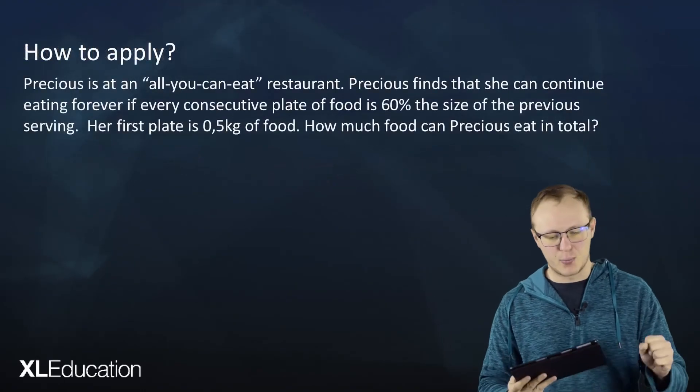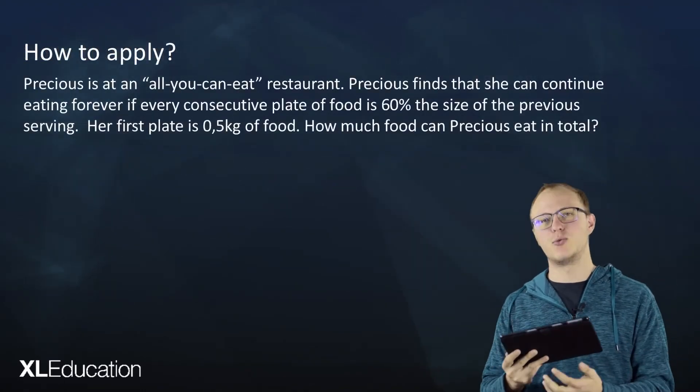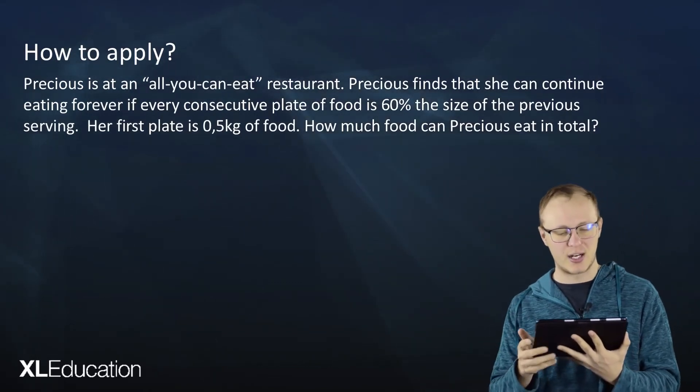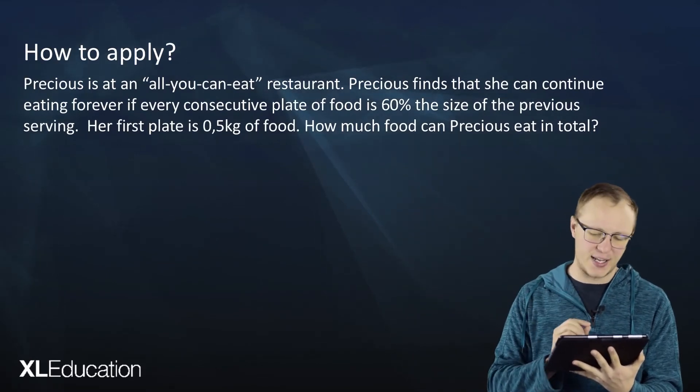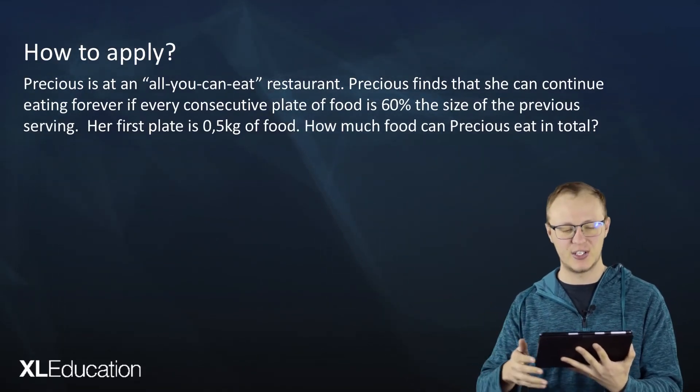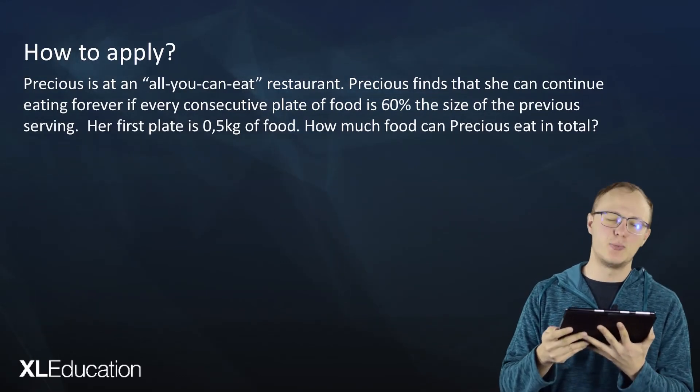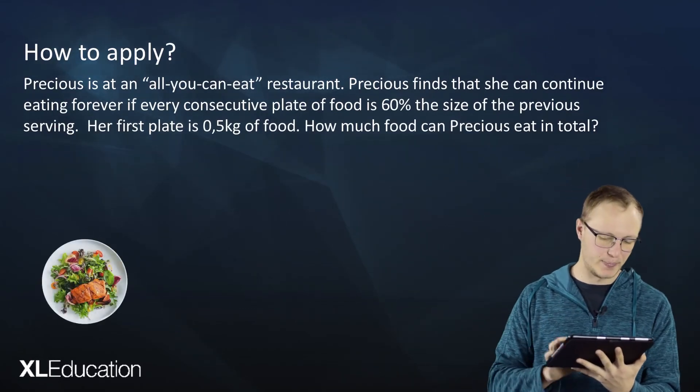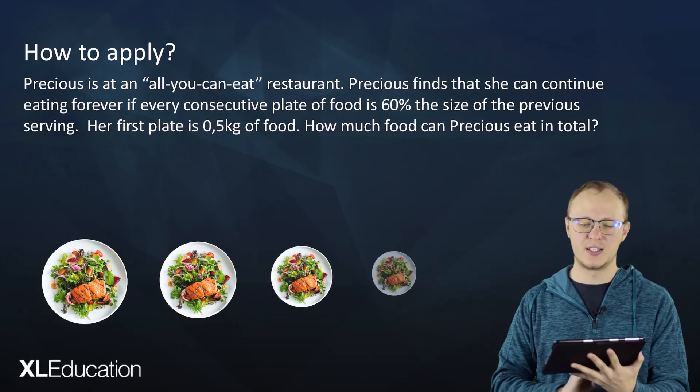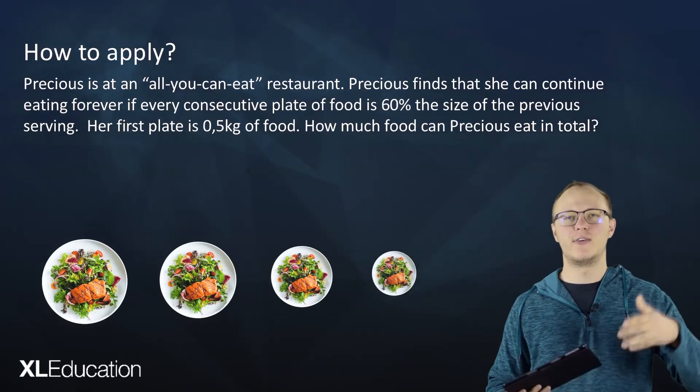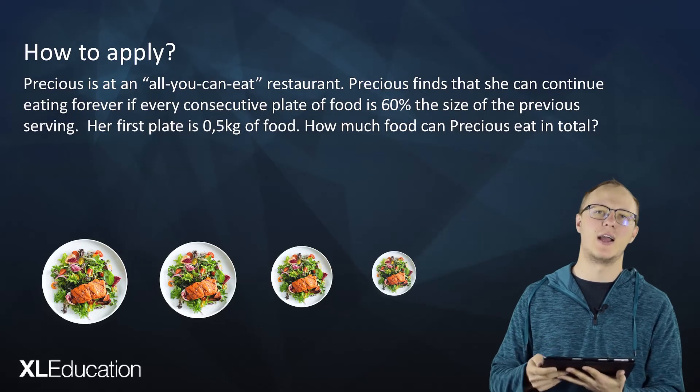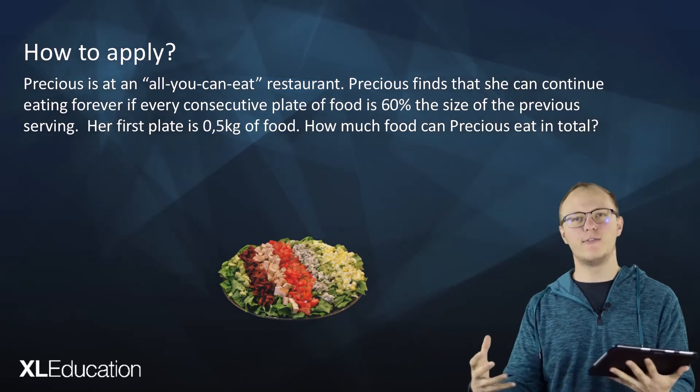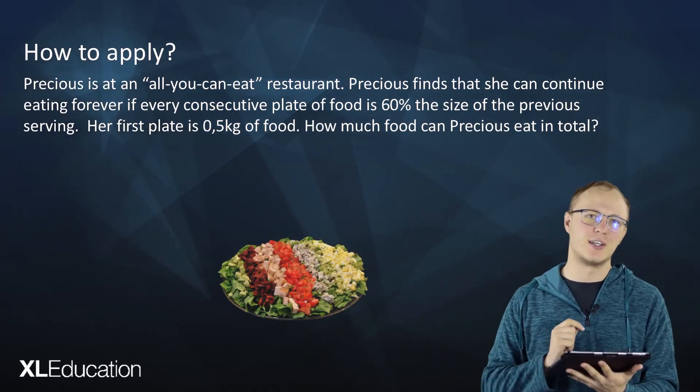Let's apply it. Precious is at an all-you-can-eat restaurant. Precious finds that she can continue eating forever if every consecutive plate of food is 60% the size of the previous serving. Her first plate is 0.5 kilograms of food. How much food can Precious eat in total? We find that each consecutive plate becomes smaller by a factor of 6 over 10. We're multiplying by 60%. So what is the total amount that all of those plates of food are going to add up to?